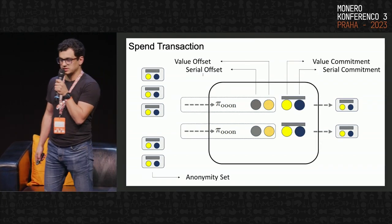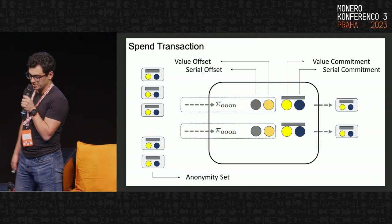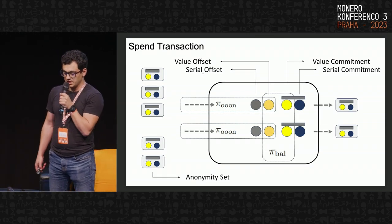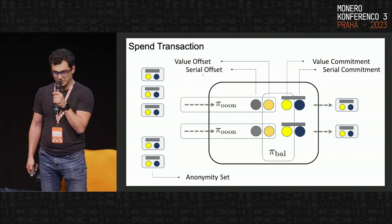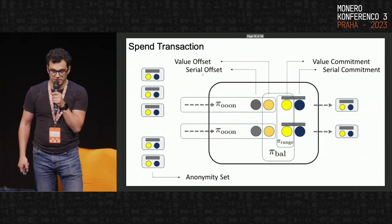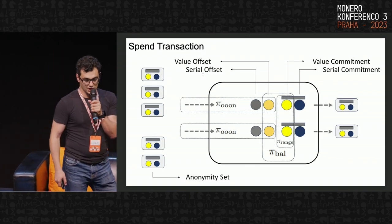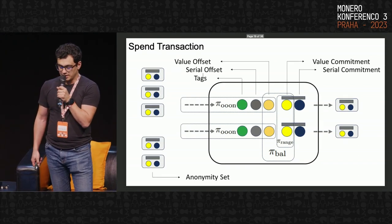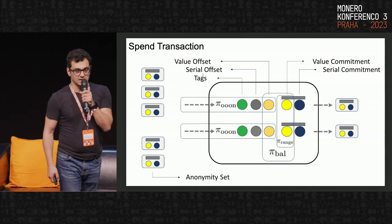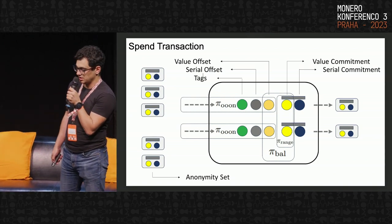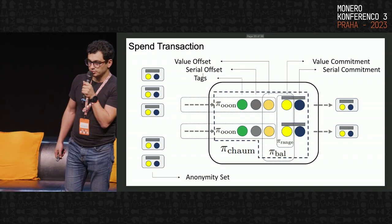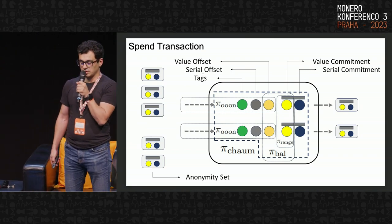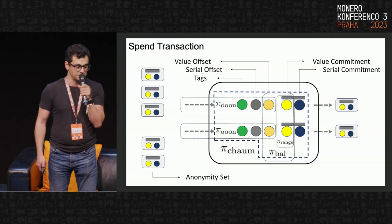Next, the transaction creates the new coins' value commitment and serial commitment. After having the value commitments, it provides a zero-knowledge balance proof along with the range proof to ensure that no output coin will contain a negative value. Finally, it reveals the linking tags of the spent coins, which are used to prevent double spending and also to generate the ownership proof through generalized Chaum-Pedersen algorithms.